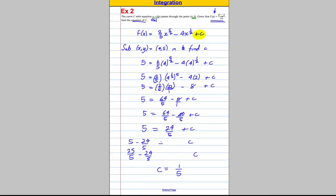And then we could state our final equation here. We should state this with the c we have found. So f of x is equal to 2 fifths x to the 5 over 2, take away 4x to the half plus a fifth. And there we go, we have found the answer. Hope that made sense. Thanks for watching.